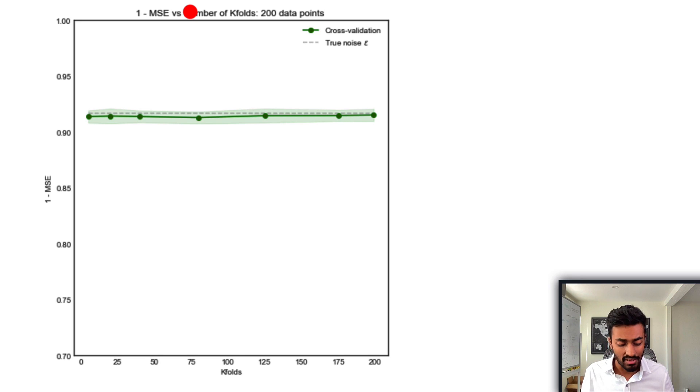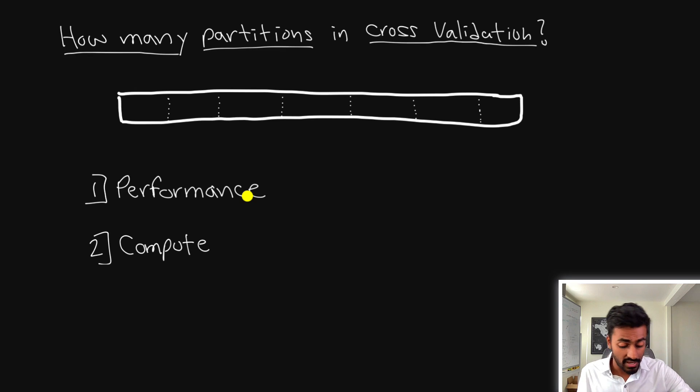We also see something even similar with a larger number of data points with like 200. In this case we can now increase the number of folds all the way up to 200 but there isn't really still any kind of performance difference even if we had a very low number of partitions. So here the performance itself is dependent on the amount of data because for smaller amounts of data you might have to increase the number of partitions but beyond a certain amount it really doesn't affect performance itself.